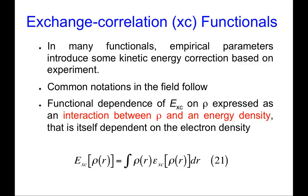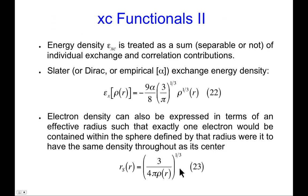In many functionals used for the exchange-correlation piece, some empirical parameters may be introduced to improve performance. Notationally, the dependence of the exchange-correlation energy on rho is what makes it a functional. In general, one gets this by integrating over all space the interaction of the density with an energy density that is itself dependent on the electron density. This exchange-correlation piece can be treated as a sum of exchange and correlation contributions.